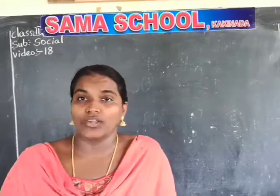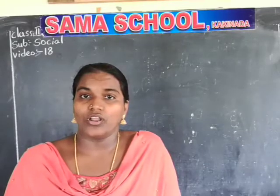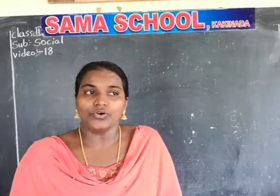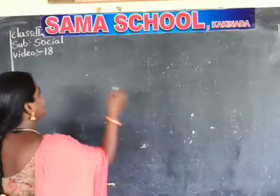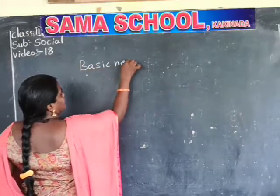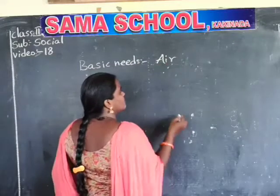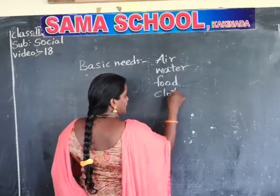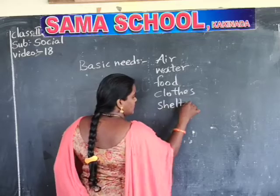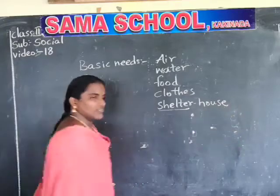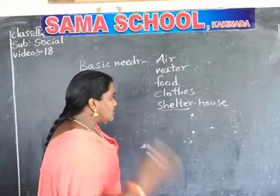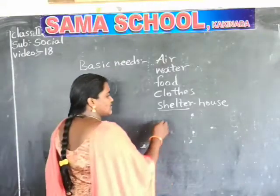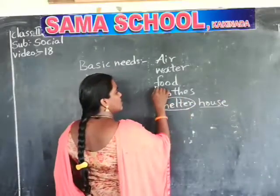Before going to that, do you remember what our basic needs are — the ones we already learned? These are very important needs. Without these needs, we are unable to live on this earth. The basic needs are: the first one is air, then water, food, clothes, and shelter. Shelter means house. These are the basic needs which we must and should have — the necessary things we need. We already discussed about shelter, house, and food.